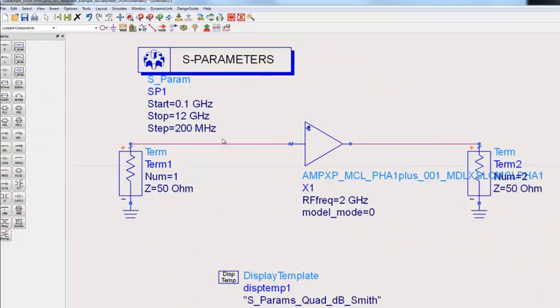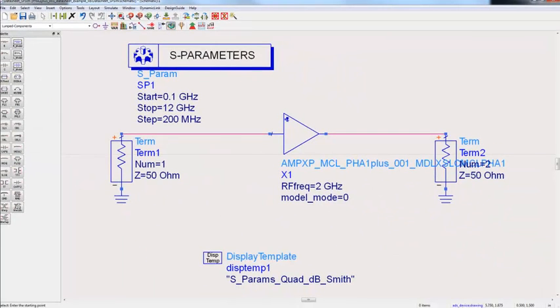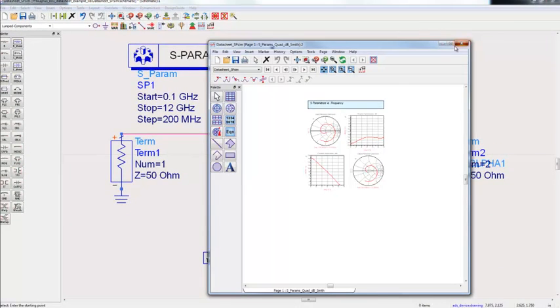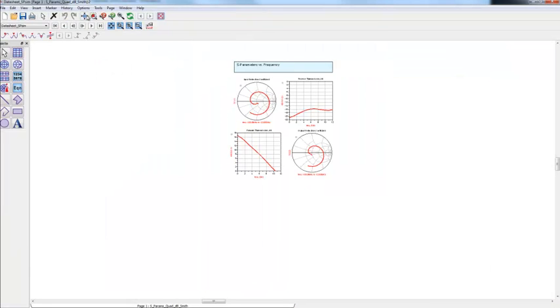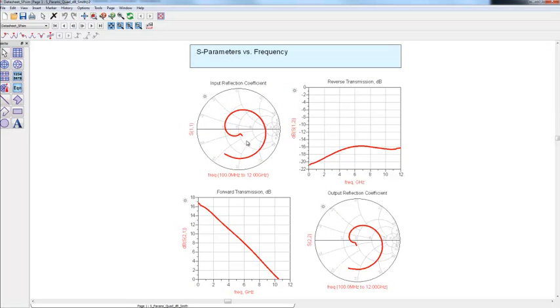Let's close the parameter window and click simulate. The simulation results are showing us the S-parameters: S11, S22, S21 magnitude, and S12 magnitude.